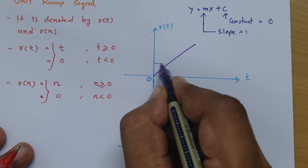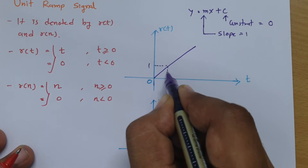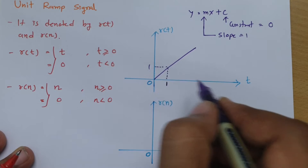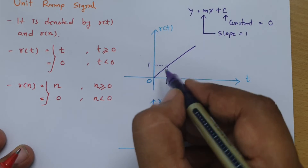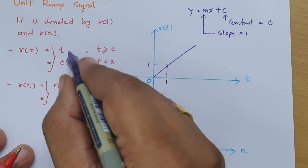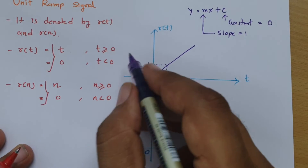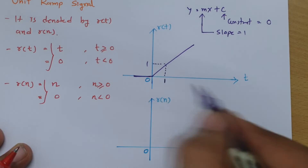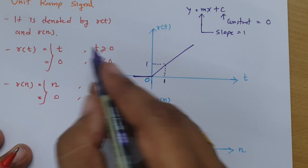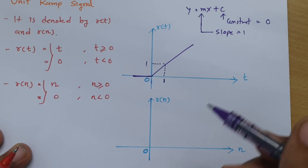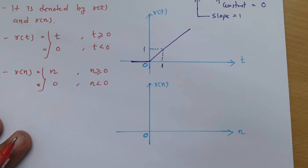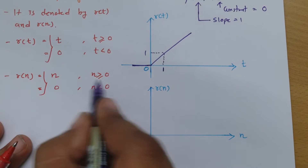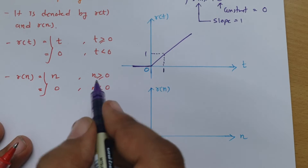The slope is 1, meaning at time 1 the amplitude is 1. So r(t) equals t, and its value is 0 for t less than 0. This is the unit ramp signal in continuous time. For discrete time, its value will be n for n greater than or equal to 0.